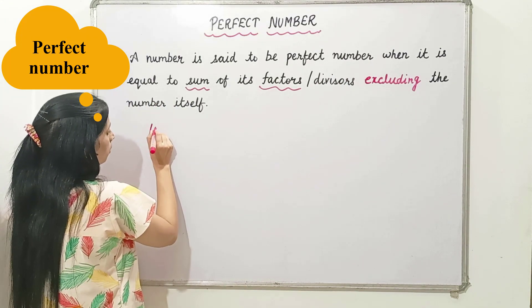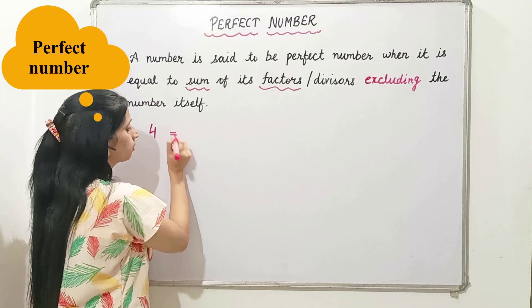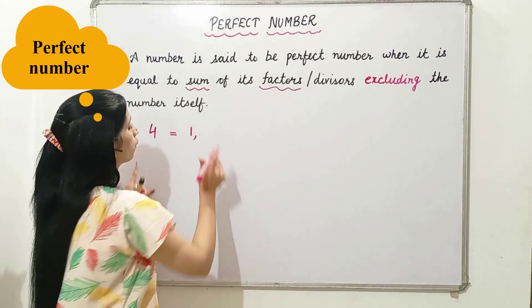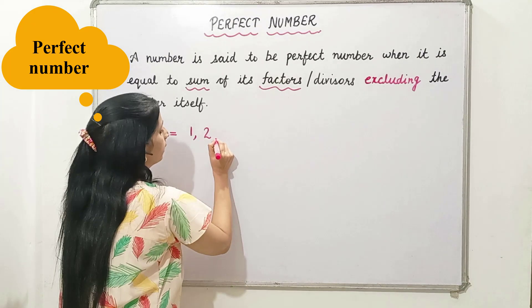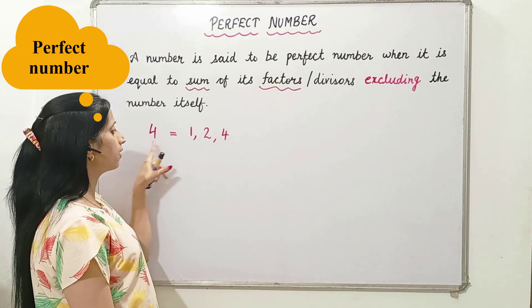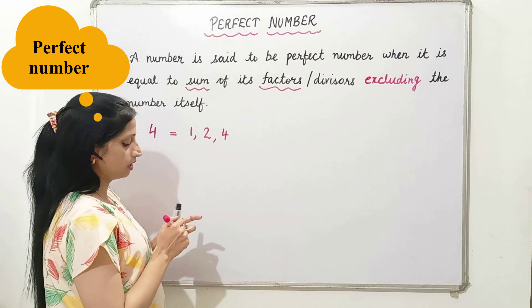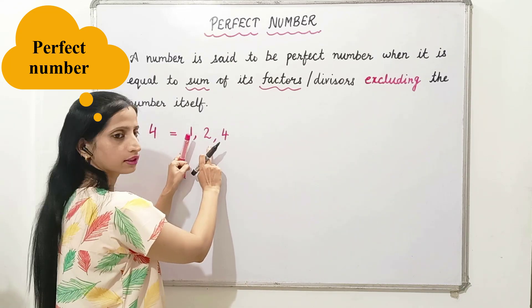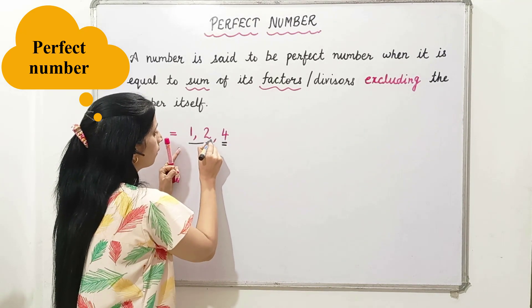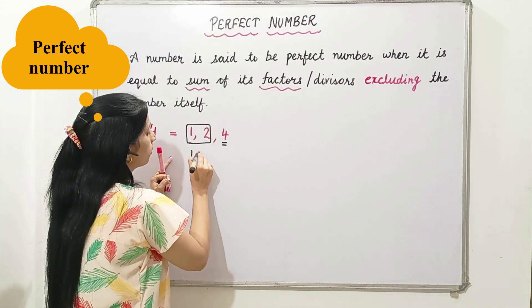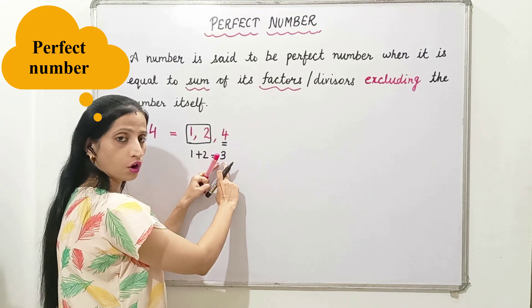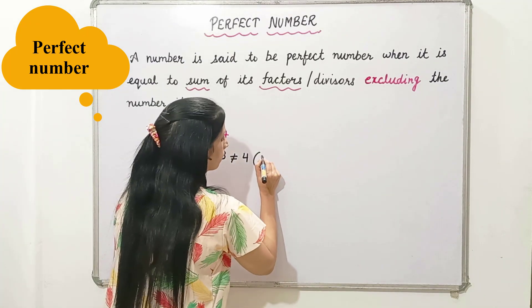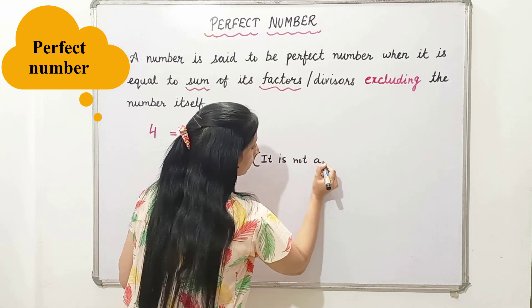Now let's learn through some examples. Let's take a very small number, 4. What are the factors of 4? The factors of 4 are 1, 2, and 4. As per the definition of perfect number, we have to add its factors and exclude the number itself. So we add only 1 and 2: 1 plus 2 equals 3. This is not equal to 4, so 4 is not a perfect number.